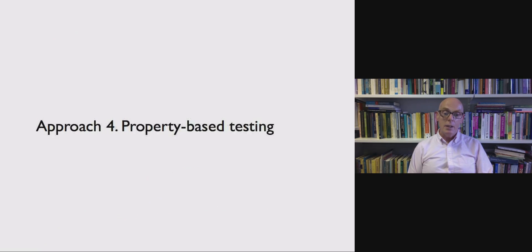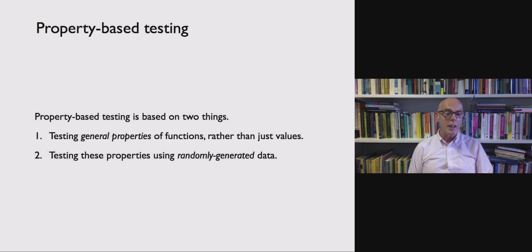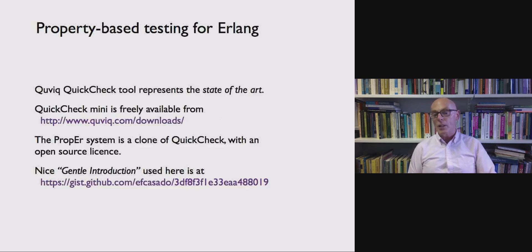Now finally our final approach is what's called property-based testing which has been particularly successful for functional programming languages including Erlang. And property-based testing is based on two things. What we do is test general properties of functions rather than just values. I'll say a bit more about what I mean about a general property in a minute. And we test those properties using randomly generated input data. So we say we expect the system to have this property and we check that with a whole collection of randomly generated values.